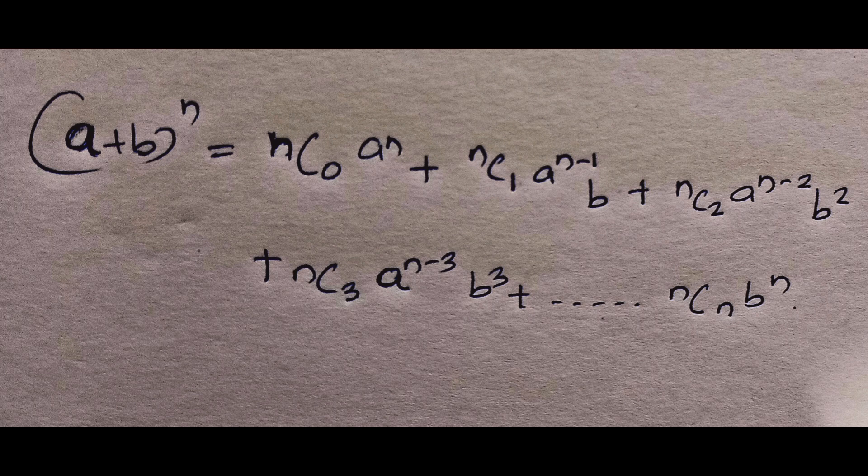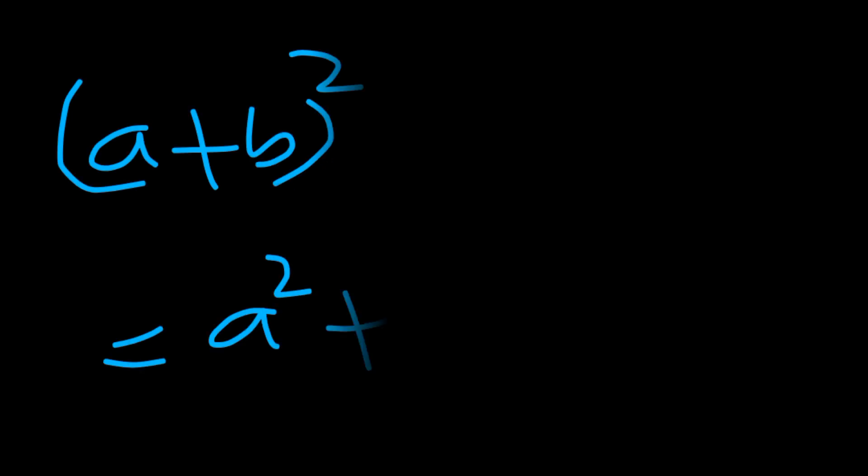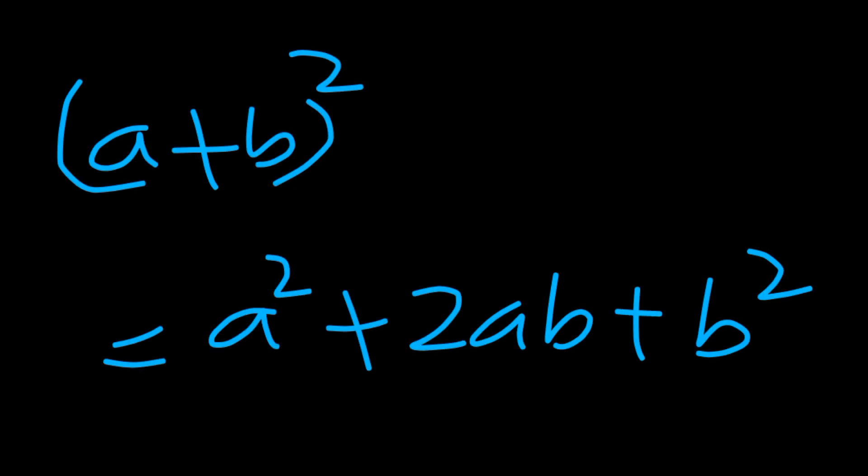For A plus B whole squared, we have 3 terms. If we put A plus B the whole to the power 10, how many terms are there? That is 11 terms. For A plus B to the power 35, how many terms are there? 36 terms. Clear? Simple.